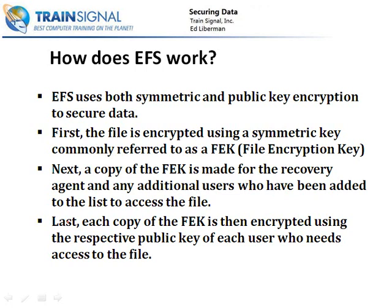Next, that File Encryption Key is then copied — there's one copy for the actual user who originated the file, and then a copy is made for what's called the recovery agent. On every network, you should have a recovery agent — one user account on the network who will have access to all of the EFS encrypted data. On Windows XP or newer, you can also make a copy of this key available to additional users who you want to grant access to the file. So there are multiple copies of this symmetric File Encryption Key — one for the user, one for the recovery agent, and optionally one for additional users.